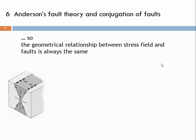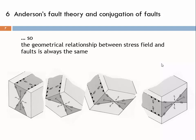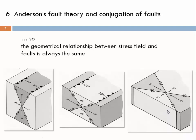We can also rotate these blocks in a different direction — rotating the stress field so that sigma 1 becomes horizontal, which produces conjugated thrust faults. The geometrical relationship between faults and the stress field is always such that sigma 1 and the conjugated faults are related by a 30 degree angle, and sigma 3 and the faults are related by a 60 degree angle. Sigma 2 is oriented along the intersection line of these conjugated faults in all three cases.